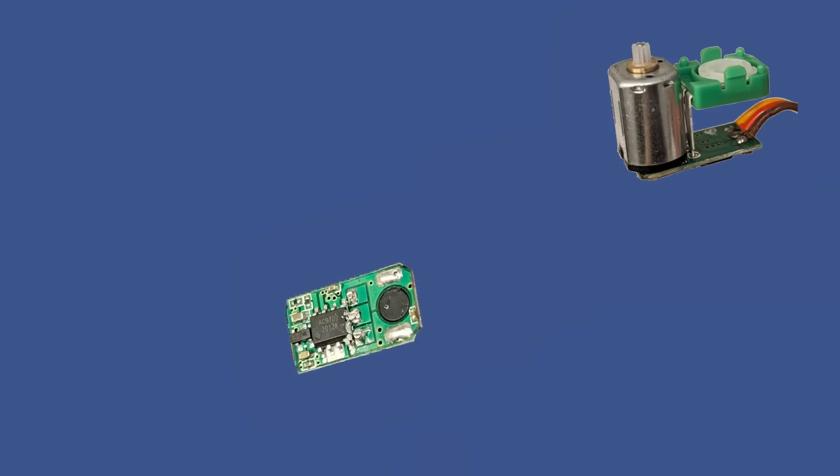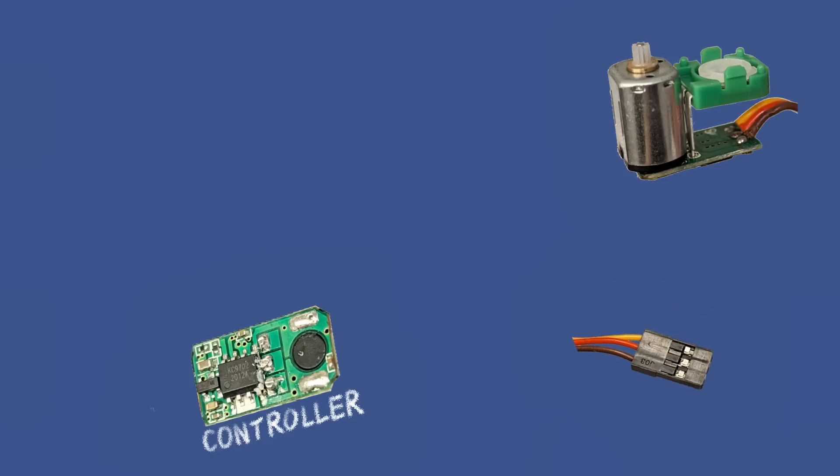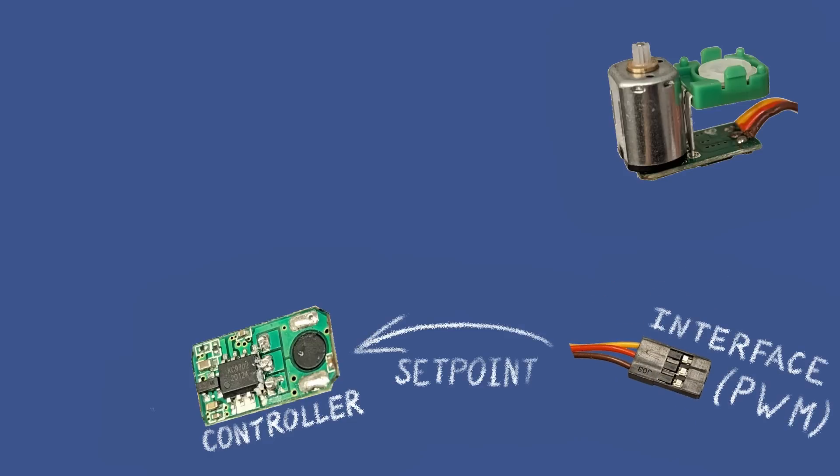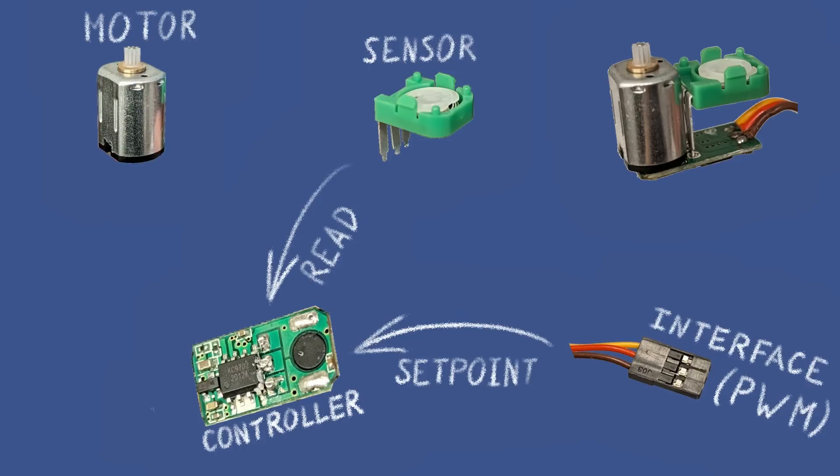This control board uses a PWM input signal to set up the required position, the so-called setpoint. Then it constantly reads the sensor's current position and calculates the motor's required direction and power. And finally, the electric motor rotates the servo motor's output shaft and the sensor. This is called a closed-loop control system. It's designed to automatically achieve and maintain the desired output position by comparing it with the actual position.